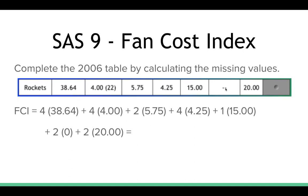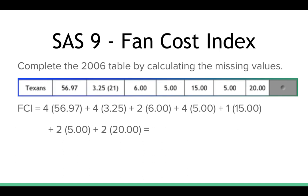For the Rockets, notice there's no cost for a program. Four tickets at $4.38, four small drinks at $4, two other drinks at $5.75, four hot dogs at $4.25, parking at $15, programs at nothing, and two hats at $20. The fan cost index to go to the Rockets is $254.06 — cheaper than the Mavericks. For the Texans, the cost to attend is $337.88. Remember how the FCI is set up, because you'll be expected to recall it yourself.